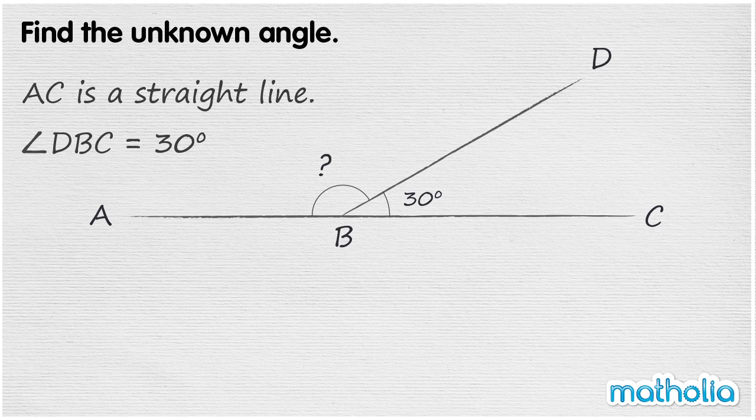Find the unknown angle. AC is a straight line. Angle DBC equals 30 degrees. We need to find the angle ABD.